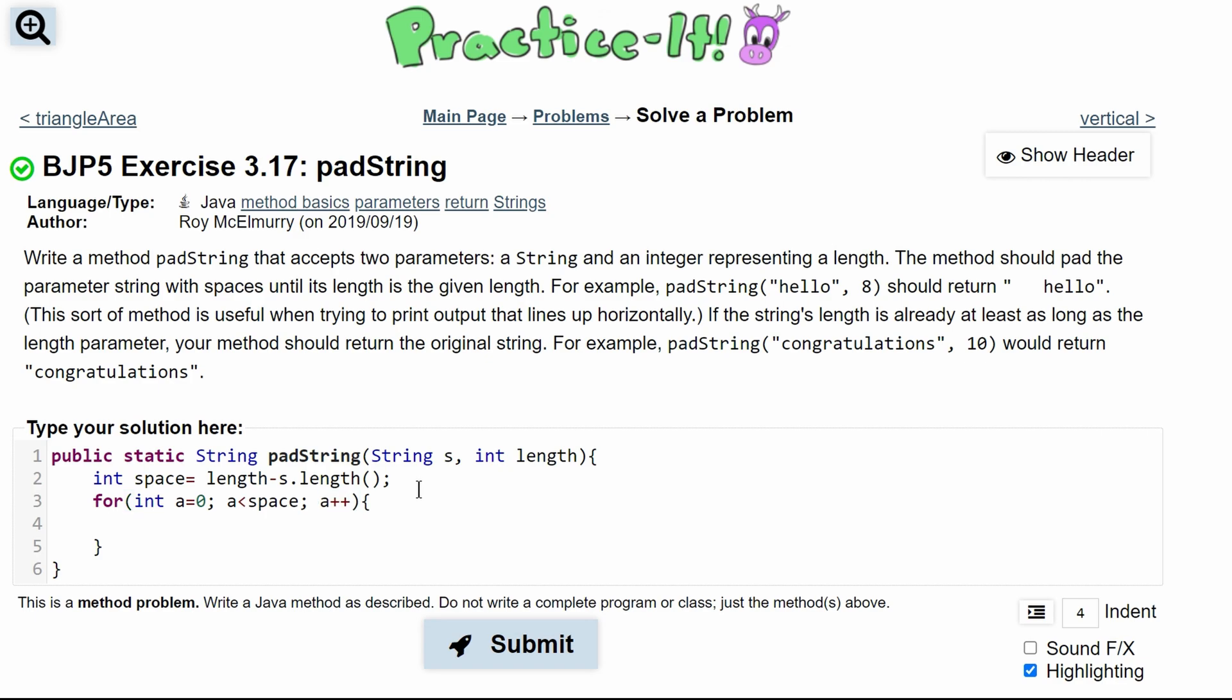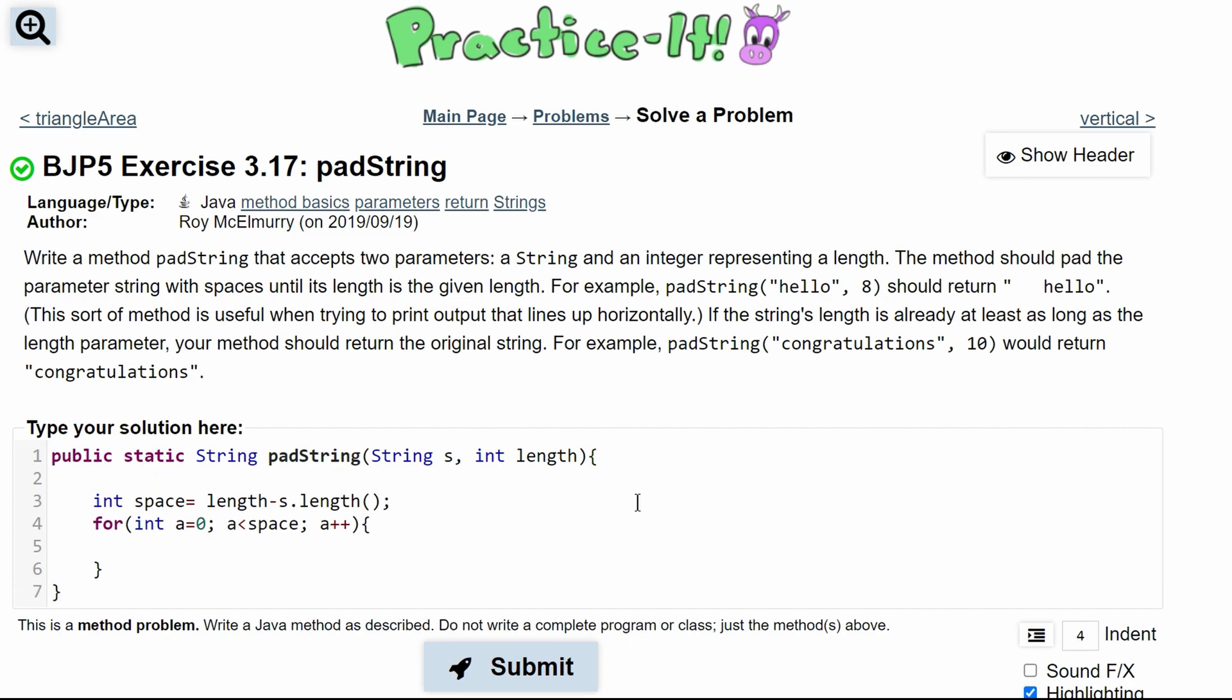And in here, we will actually, outside of here, because we're going to return this, we need to make a temporary variable. So we can say String temp, and this is going to hold this string right here, and we can just set this equal to empty parentheses to initialize it.